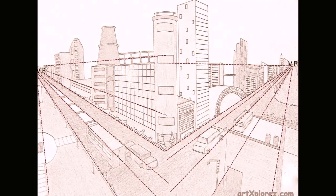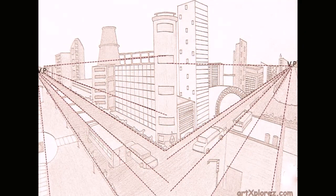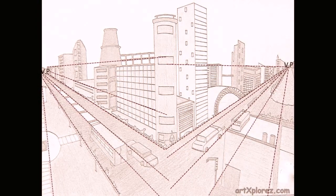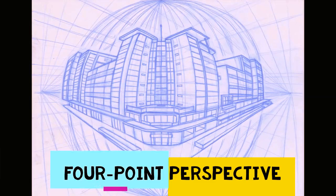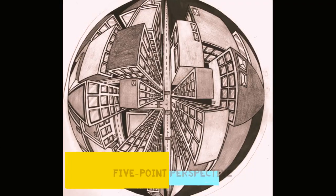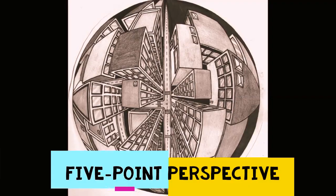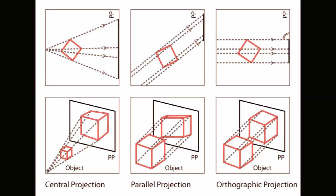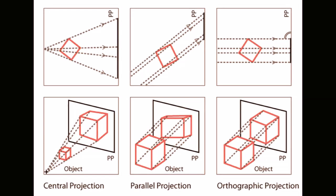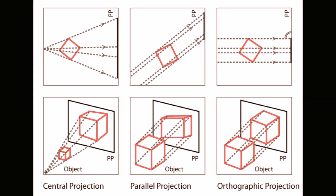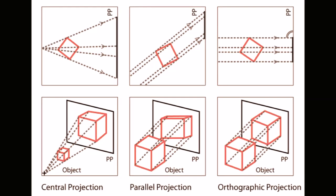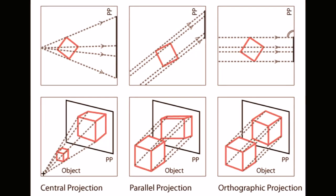Seen from the corner, one wall of a house would recede towards one vanishing point while the other wall recedes towards the opposite vanishing point. Other types of perspective drawings include three-point perspective, four-point perspective, and zero-point perspective. In this series of tutorials we will focus on parallel perspective, which is basically a one-point perspective, and angular perspective, which is basically a two-point perspective.